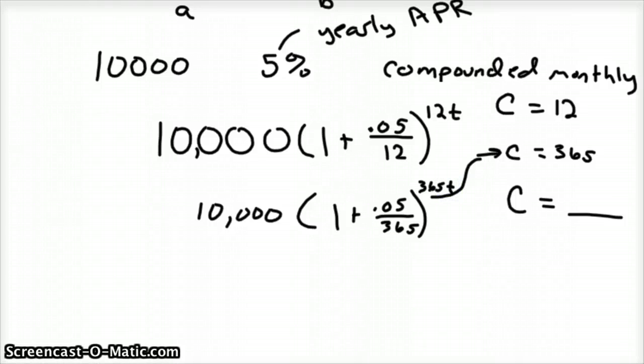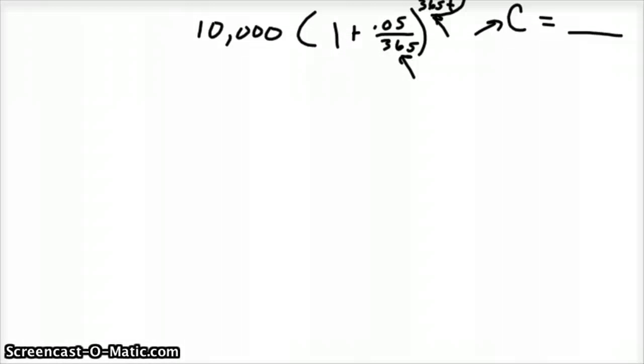And if you, I don't want to spend the time doing compounded hourly, you'd figure out how many hours are in a year and that would go in this spot. And so it'd be a huge number. Eventually, what you're going to do is reach a point where you want to compound continuously. If you compound continuously, the equation looks like this.